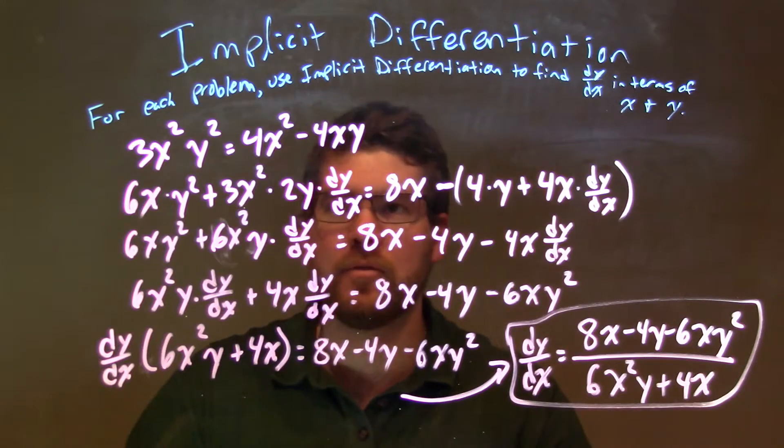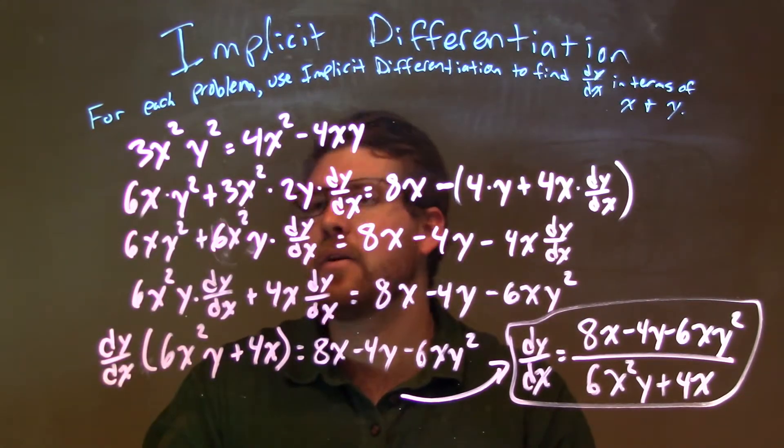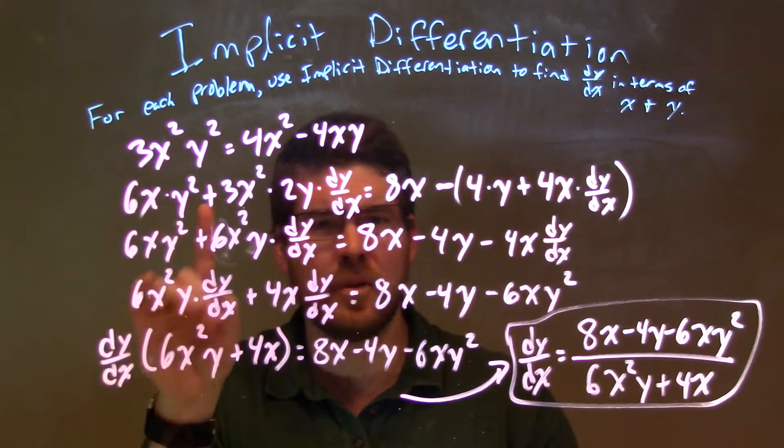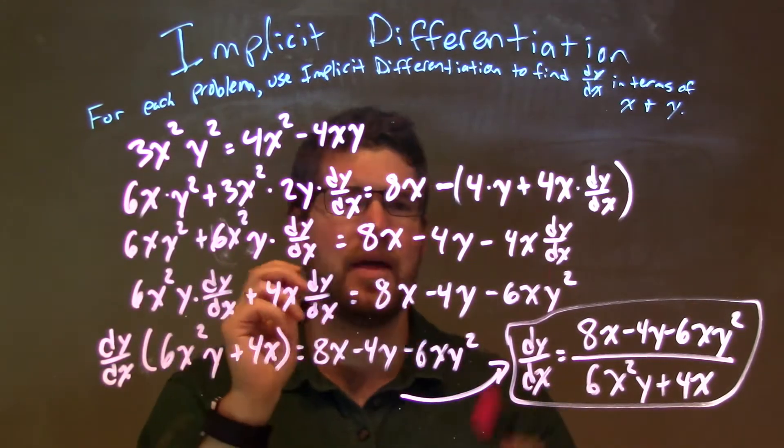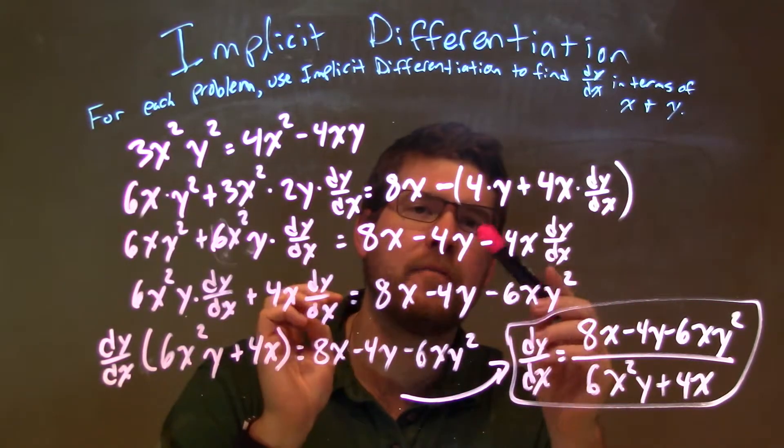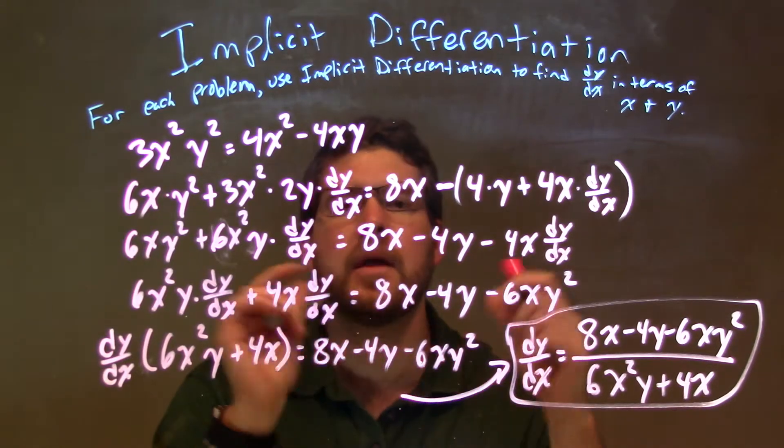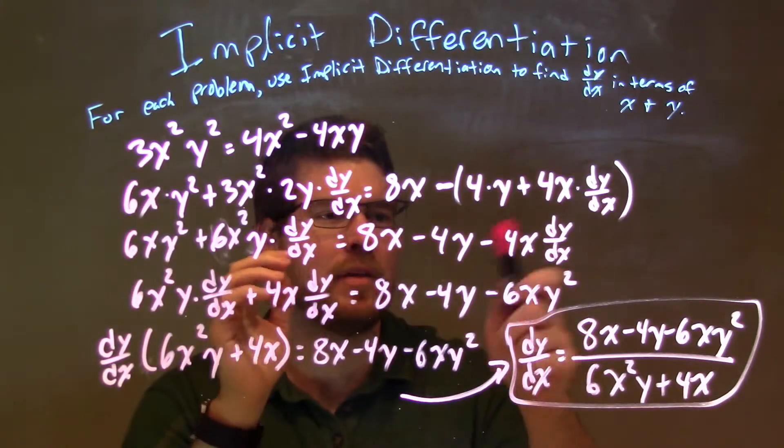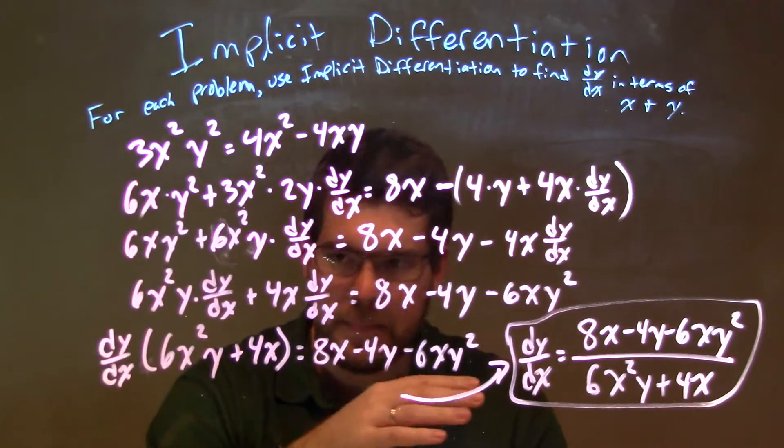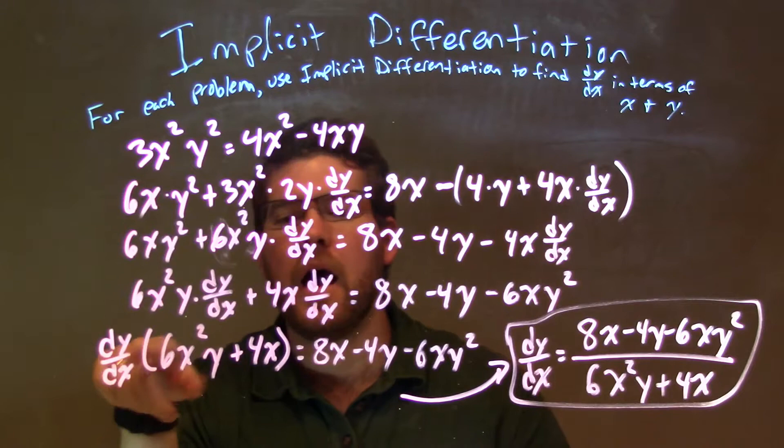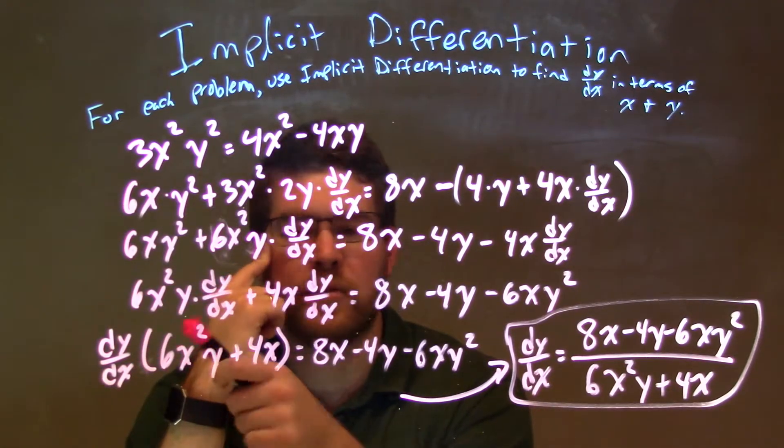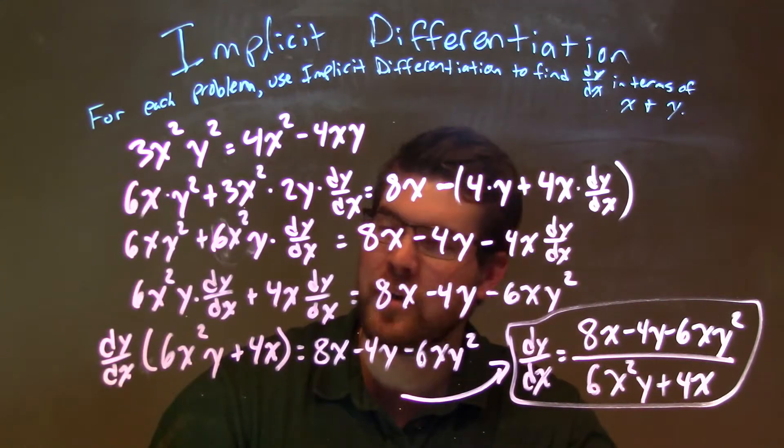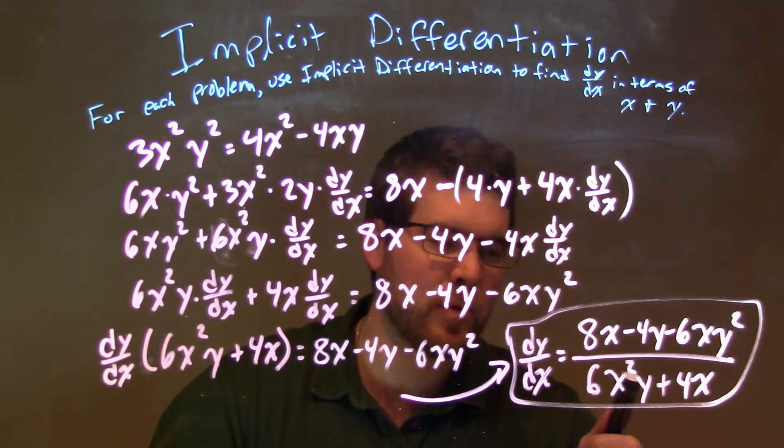So let's recap: we're given 3x²y² equals 4x² minus 4xy. Left-hand side, derive, I have 6xy² plus 3x² times 2y dy/dx. Now I was using the product rule there. The right-hand side, 4x² becomes 8x, and then the right-hand side using the product rule again, I have all being subtracted by 4 times y plus 4x dy/dx. Distributed the minus sign across and simplified the left-hand side. Then I got my dy/dx's, everything attached to the left, all the other ones that didn't have a dy/dx attached to the right. From there I pulled that dy/dx out, leaving me dy/dx times 6x²y plus 4x, and then divided that to both sides, giving me dy/dx by itself. So dy/dx equals 8x minus 4y minus 6xy² over 6x²y plus 4x.